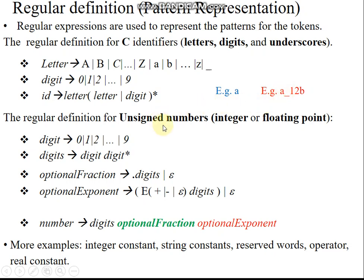For unsigned numbers, we have the pattern where digit always covers 0 to 9. Then digits — for example the number 9 — means a single digit followed by any number of digits. In this example we have two digits: 5 and 2.